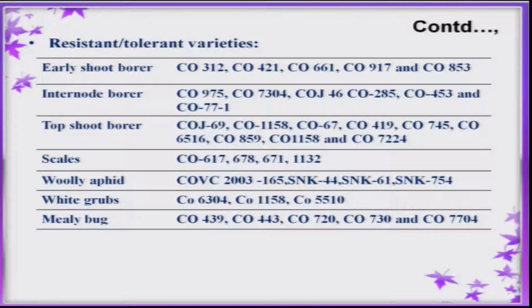Resistant varieties are one of the important components in an integrated pest management program. In sugarcane, there are a good number of resistant or tolerant varieties against each pest. For early shoot borer, there are a few important cultivable varieties. Likewise, for woolly aphid, important resistant varieties have been released from Karnataka — the SNK series 44, 61, and 74.